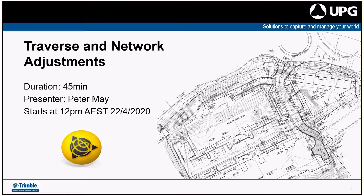Let's dive into the Traverses and Network Adjustments. Trimble Business Centre is Trimble's flagship office software for geospatial — for surveyors and also construction people. We will look at this more from a geospatial perspective. We're not going to look at baseline processing today; if we run another session on GPS baseline processing, we'll also run the network adjustment package to see how it flows through the workflow from baseline processing into network adjustments.